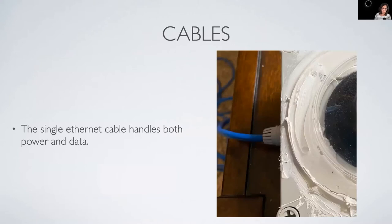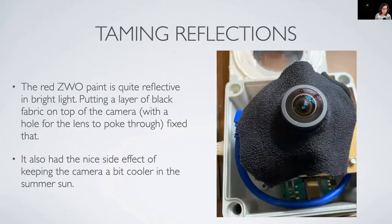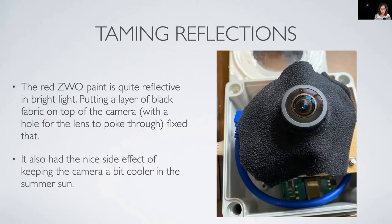You can see how the cables come into the Pi and my expert application of silicone sealer — I'm not the world's neatest builder. One thing I found really useful that you might not see in other build recipes: take a piece of black fabric, cut a hole in the center, and put it over top of your camera. The red finish on ZWO cameras is very reflective, and the sun or a full moon will bounce off the camera, off the dome, and back into your lens, creating an ugly reflection. The black fabric eliminates those reflections and also keeps some sun off the camera, keeping it cooler in the summer.